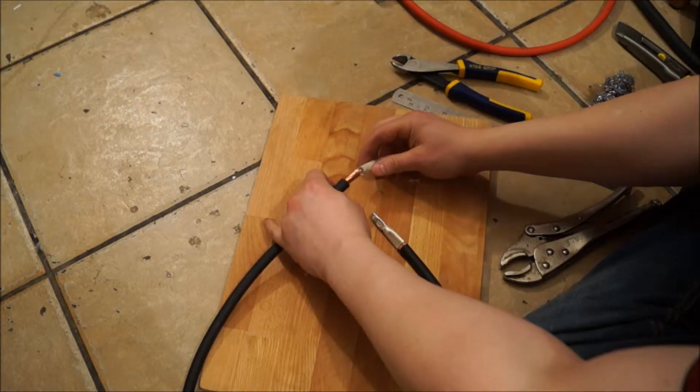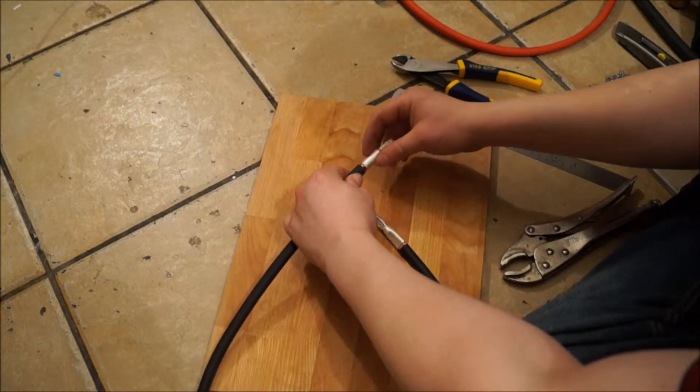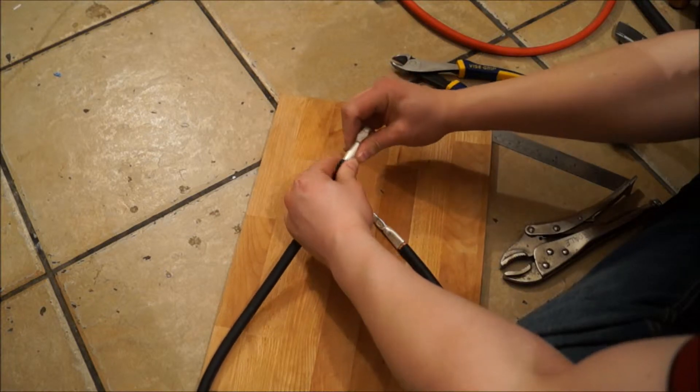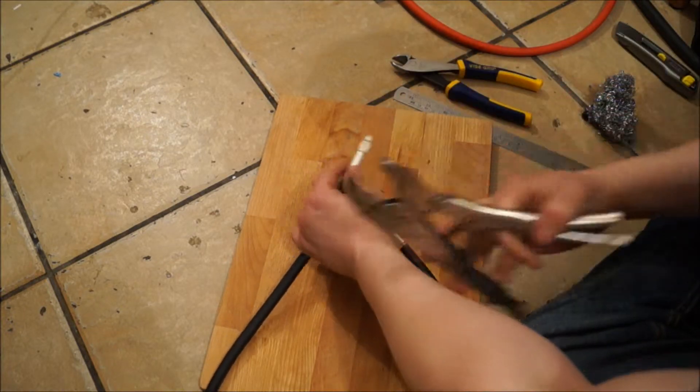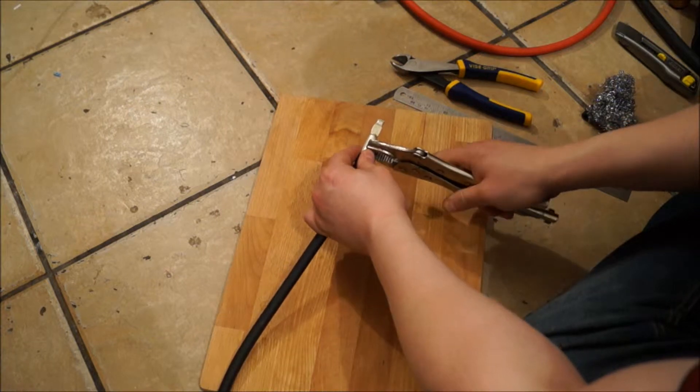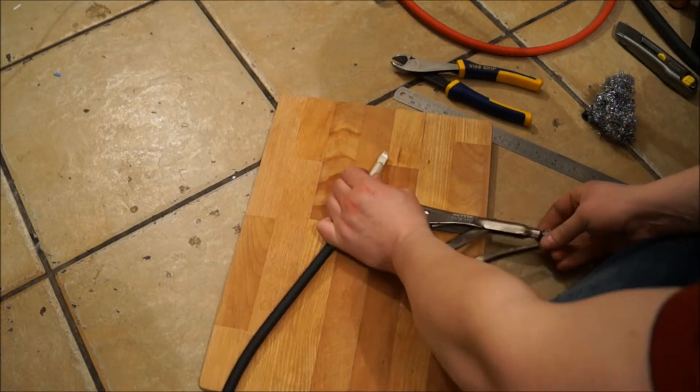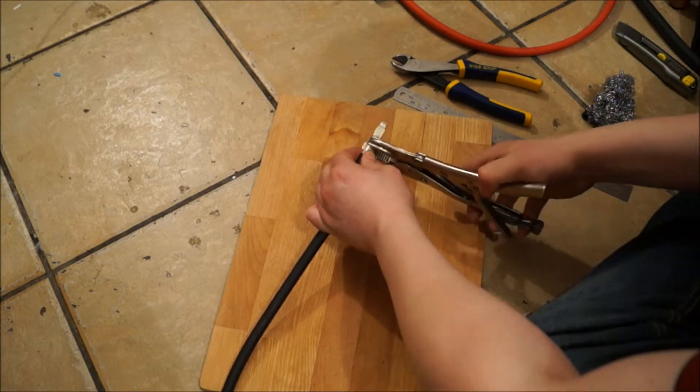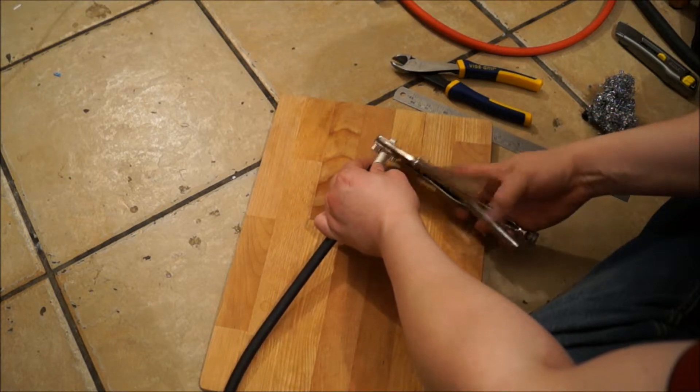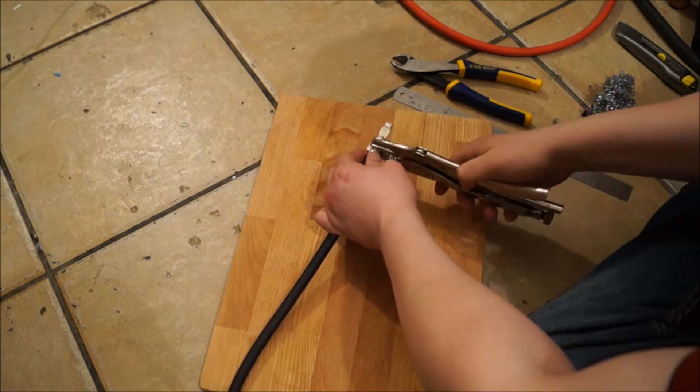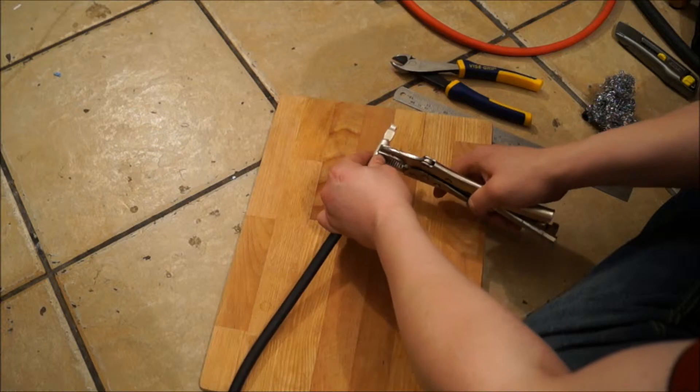That one up nice and snug right up to there. Get your mole grip there. You want to kind of adjust it using half turns until you get the grip just right to crimp it up the first time.